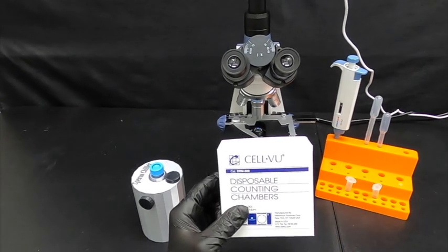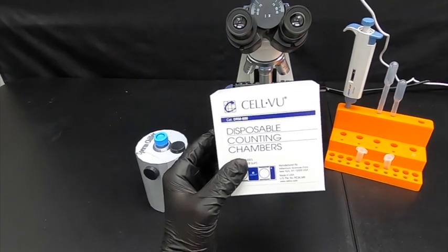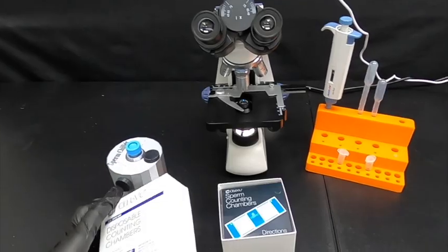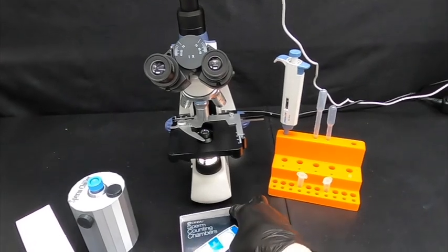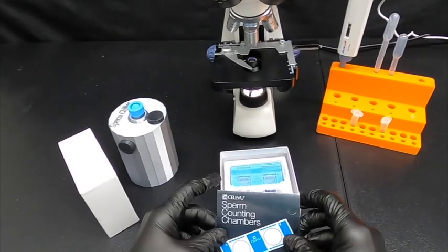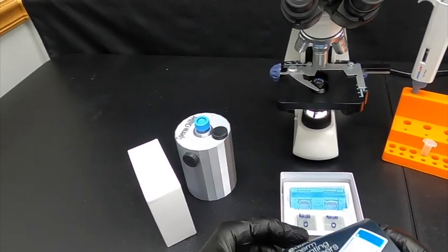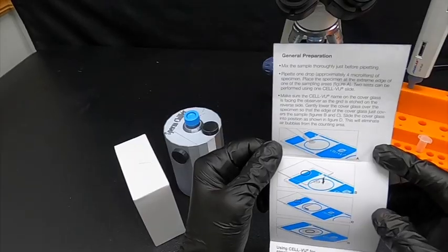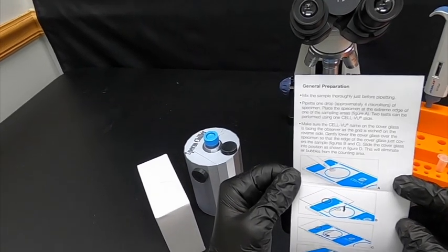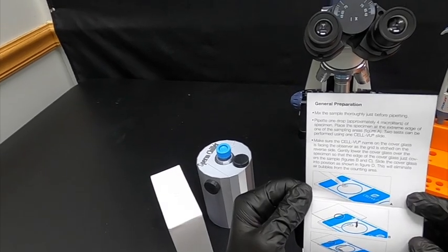Today, we're going to be demonstrating the use of the CellView disposable semen counting chambers. So first, we'll open up the package and take a look at the instructions. These are rather brief and simple. There's a couple steps that we'll go over just to ensure that you see the proper use of it so you get the best results.